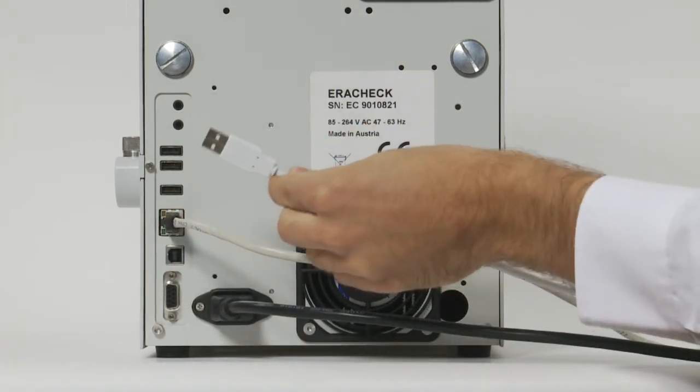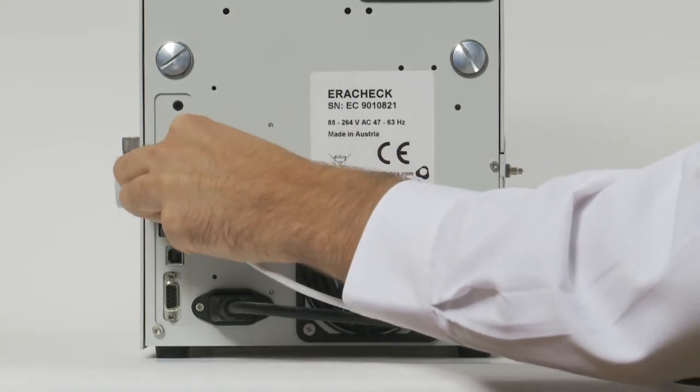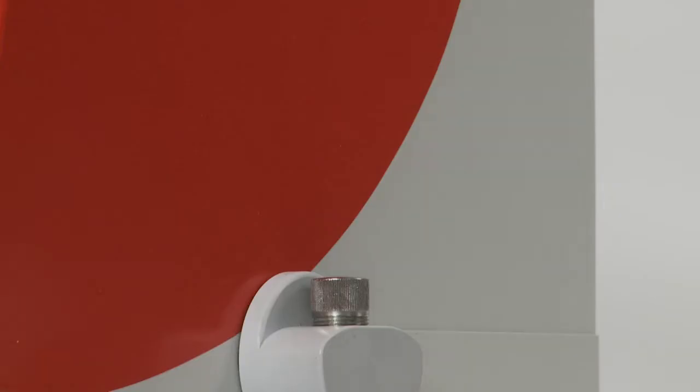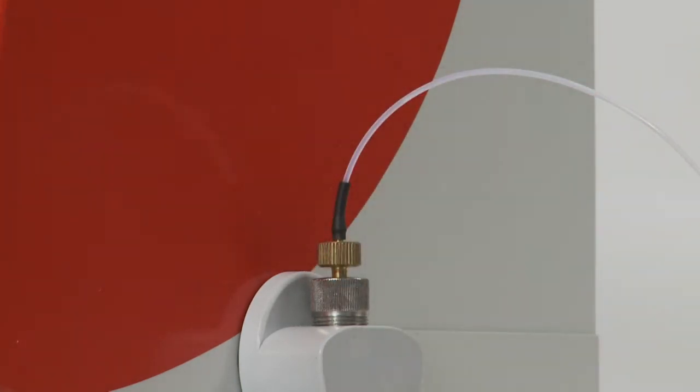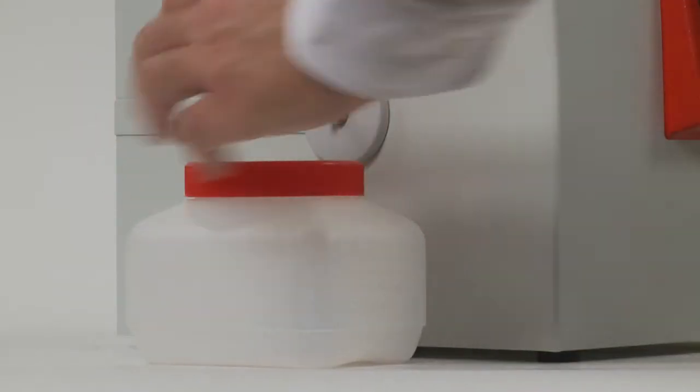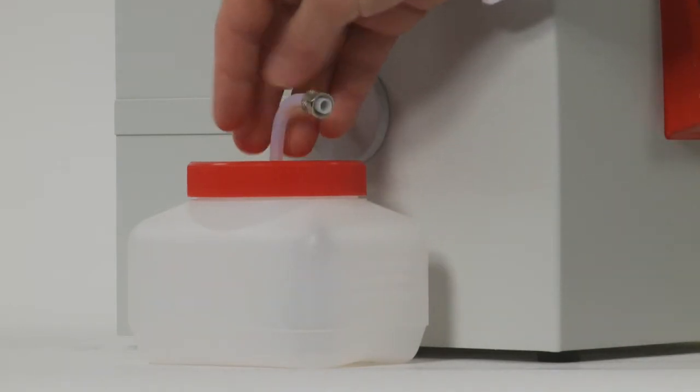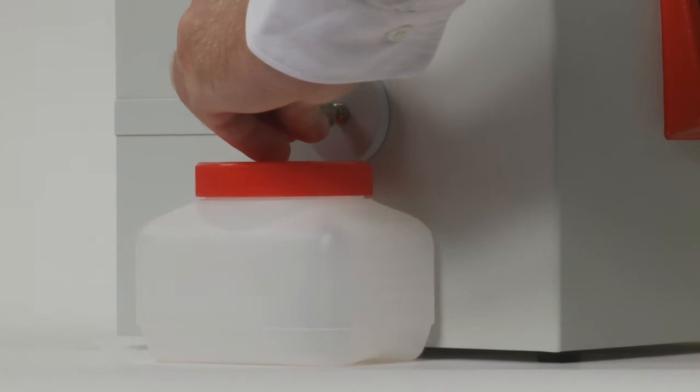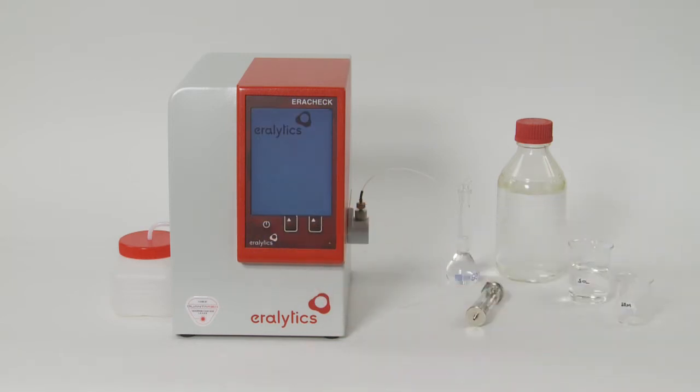Put the inlet tube in the luer inlets on the right side of the instrument. Then place the waste container next to the instrument and connect the outlet tube to the outlet on the left side of the instrument. Switch on the analyzer by pushing the power button on the front.